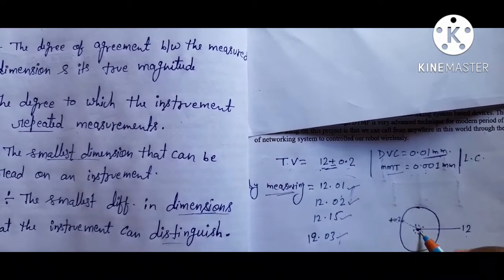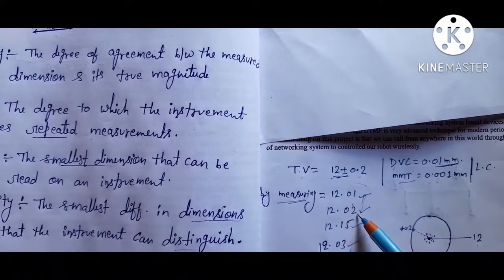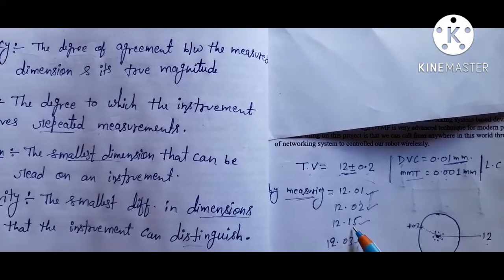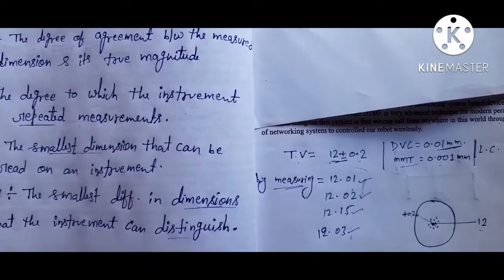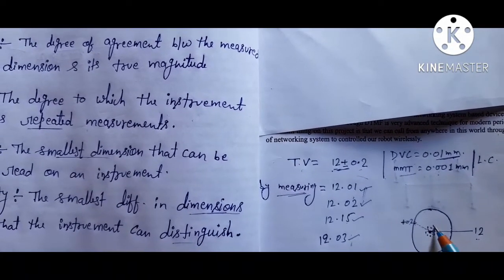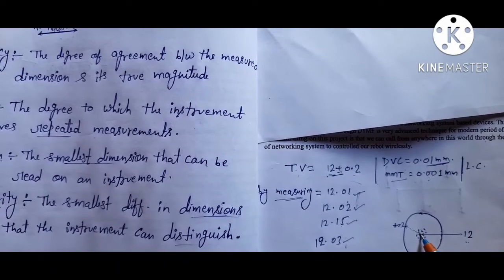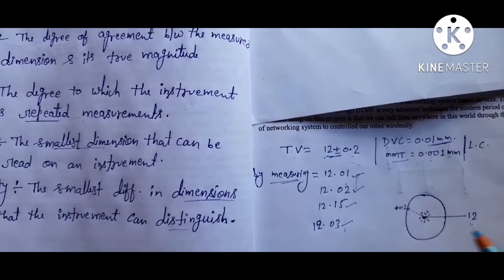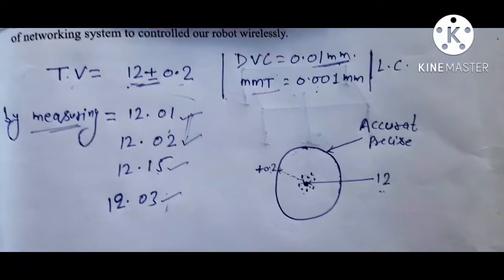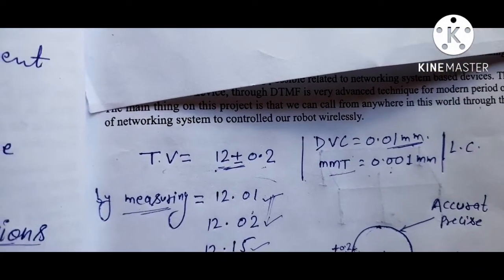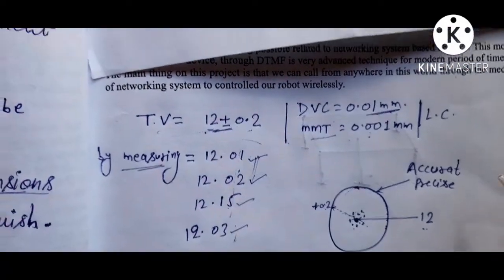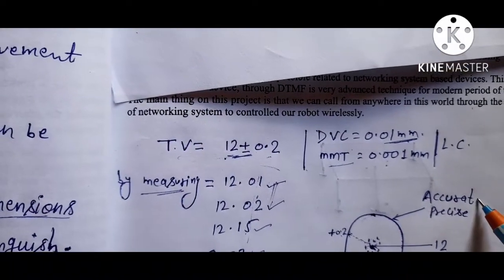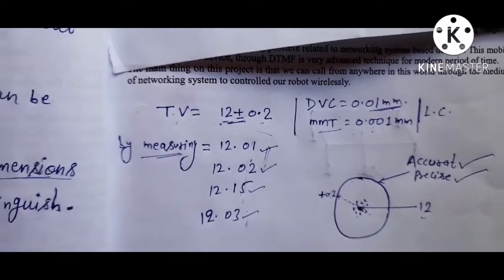All these dimensions are located very close to 12 — values like 12.01 and 12.02 are very precise and near the true value. 12.15 is a little further but still within the accurate range. Since all values are very close to 12, this diagram is both accurate and precise.